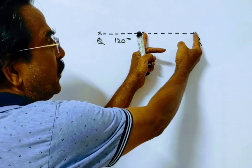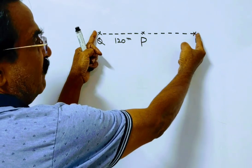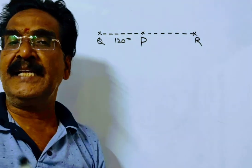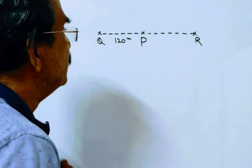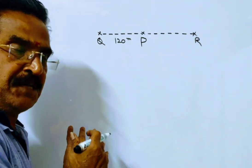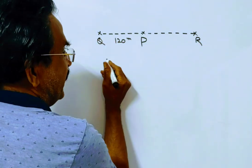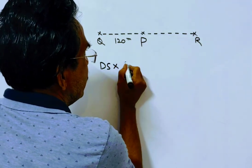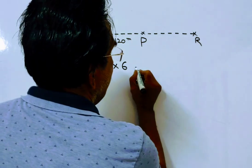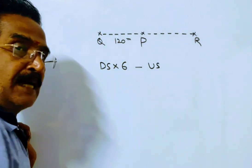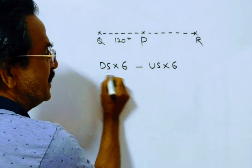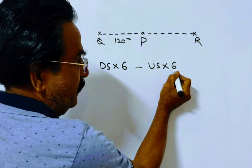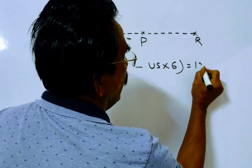This is the distance traveled in upstream and this is the distance traveled in downstream. The distance traveled in downstream is 120 meters more than the distance traveled in upstream. Say downstream velocity is ds and upstream velocity is x. In downstream he traveled 6 minutes and in upstream also he traveled 6 minutes. So this is the distance traveled in downstream in 6 minutes and this is the distance traveled in upstream in 6 minutes. The difference between these two is equal to 120 meters.